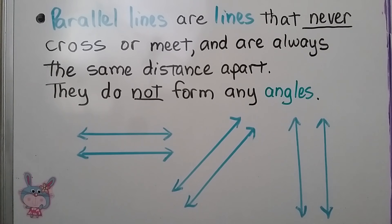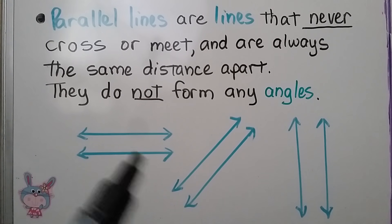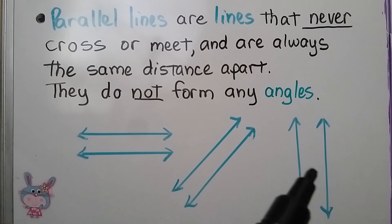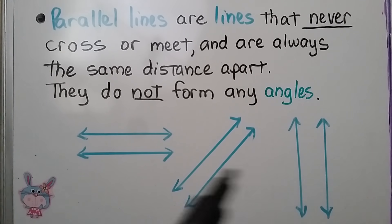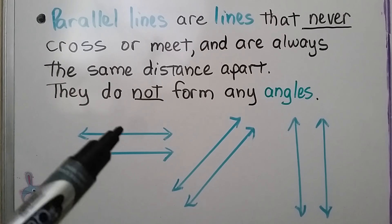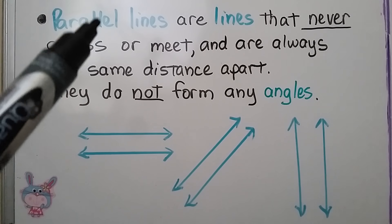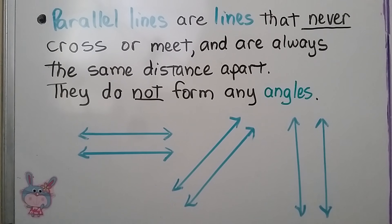Parallel lines are lines that never cross or meet and are always the same distance apart, and they do not form any angles. So these two are parallel to each other — they'll never cross or meet. And so are these and so are these. They could be farther apart or very close to each other. One way to remember that the word parallel applies to these lines is that there are two L's in the word parallel that look like parallel lines.